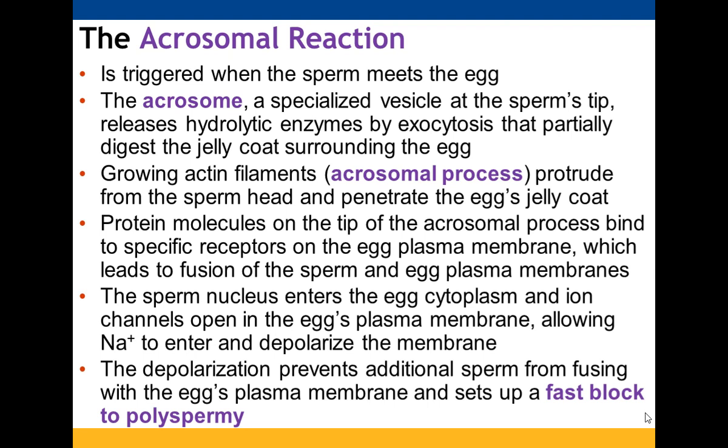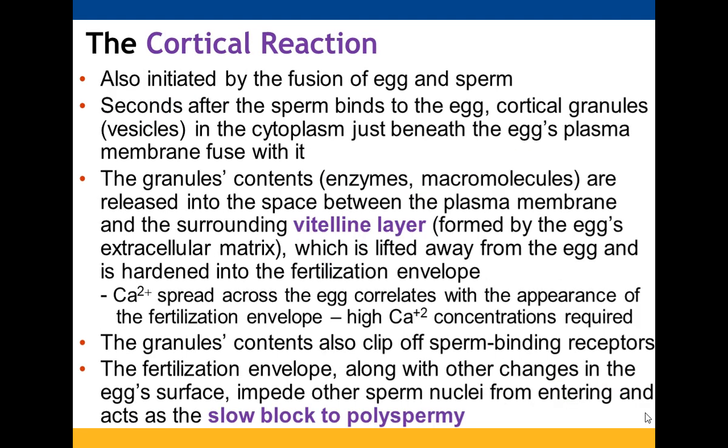The cortical reaction is also initiated when the egg and sperm fuse together. Cortical granules — vesicles in the cytoplasm just beneath the egg's plasma membrane — start to fuse with that plasma membrane. Their contents, enzymes and macromolecules, are released between the plasma membrane and the surrounding vitelline layer, which is made by the cell's extracellular matrix. This lifts the vitelline layer away from the egg and allows it to harden into what we know as the fertilization envelope.